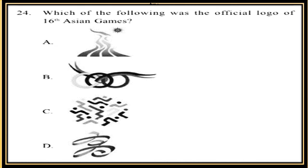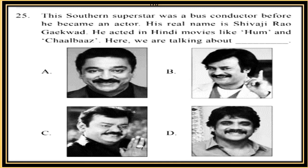Question 24. Which of the following was the official logo of the 16th Asian Games? See options A, B, C, D and choose the correct answer. Question 25. The southern superstar was a bus conductor before he became an actor. His real name is Shivaji Rao Gaikwad, and he acted in Hindi movies like 'Hum' and 'Chalbaz'. See the options and identify this southern superstar.